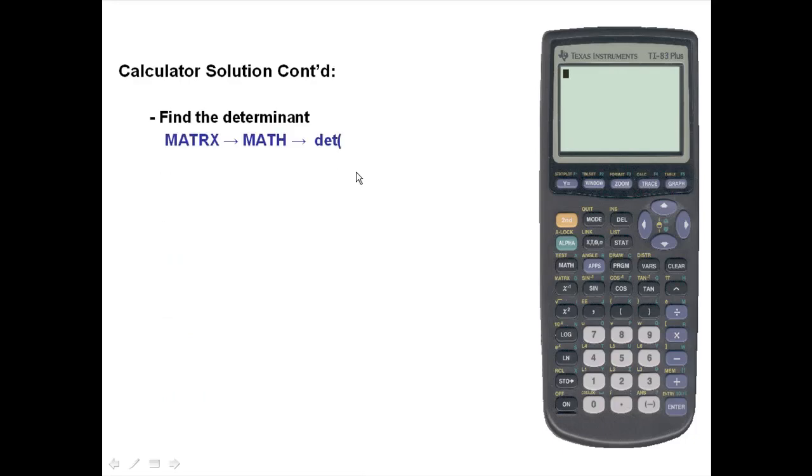Now, we'll find the determinant. We'll go back into the matrix. We're going to scroll over to math. And our first option is DET, which is short for determinant. And we'll press enter.